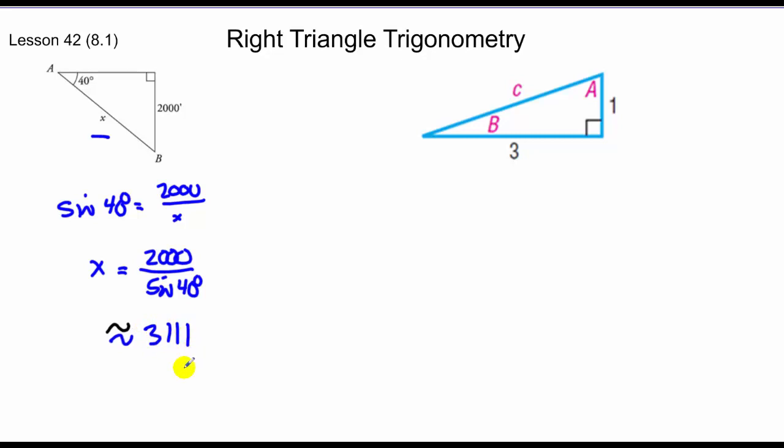And we get an answer of roughly 3,111. Alright, moving on. I want to find A, B, and C in this. Typically a direction for this problem would be solve the triangle, because they're asking you to solve for every missing part.